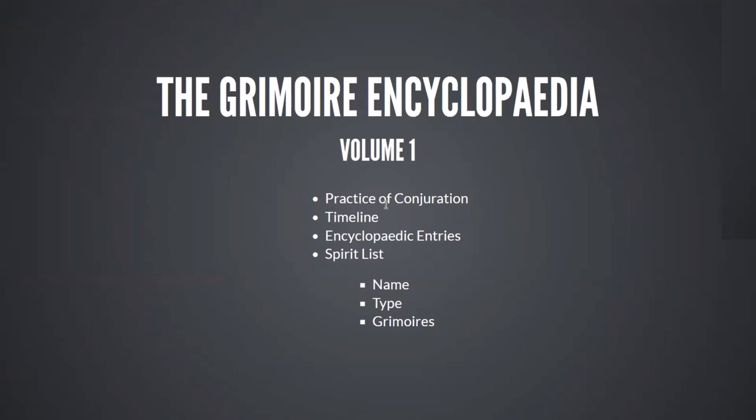This is the breakdown of what you get in Grimoire Encyclopaedia Vol. 1. It's a practice of conjuration, fasting, preparation, all that kind of stuff — the ways of invoking the spirits and things like this as well. It gives the timeline, which is basically the entries for all the grimoires in chronological order, so you can work through them that way around as well.